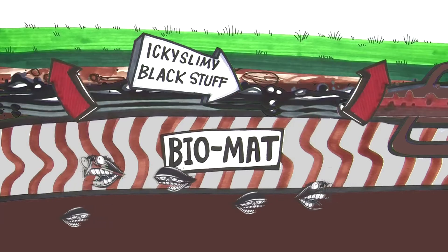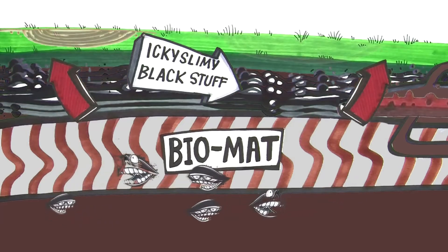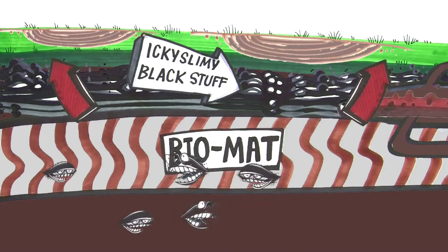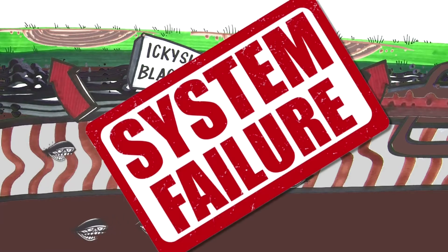after a while, there's too much black, slimy stuff. The biomat grows thicker. Too thick, it clogs, and your system fails.